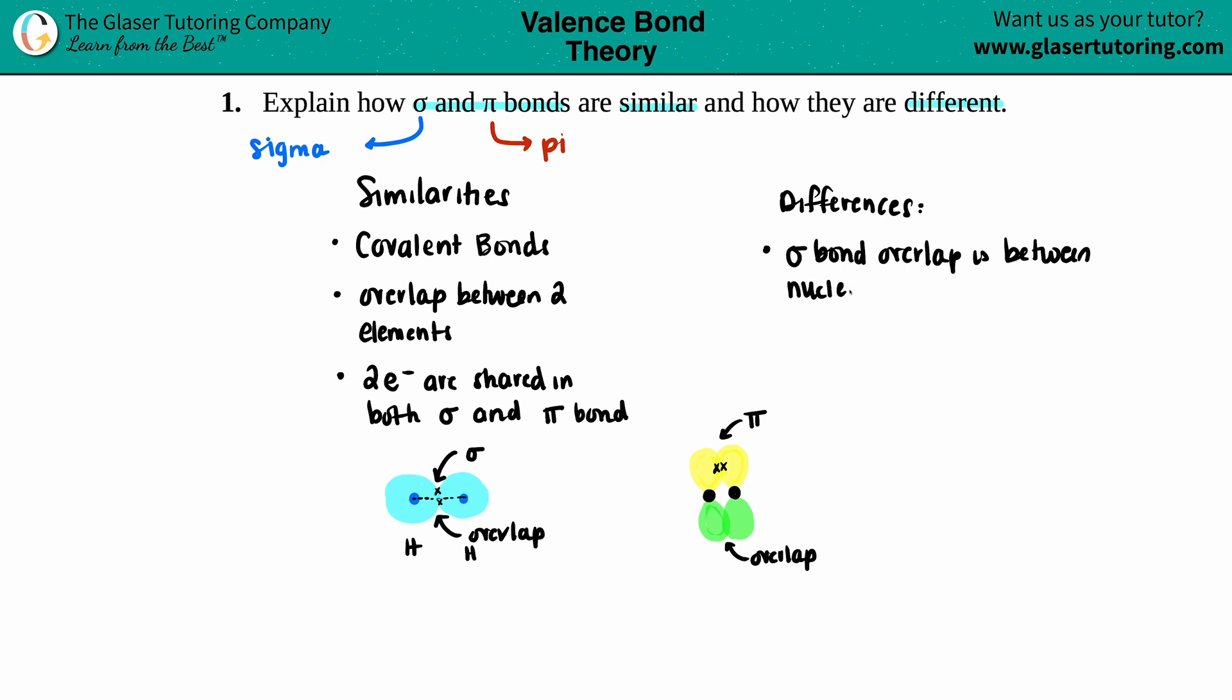And for the pi bond, where do you think that overlap is? Yeah, well, here's the nuclei. It's above the nucleus. And technically I could have put the two electrons down here. So it could have been below the nucleus as well. So for the sigma, it's between the nuclei. For the pi bond, the overlap is either above or below the nuclei.